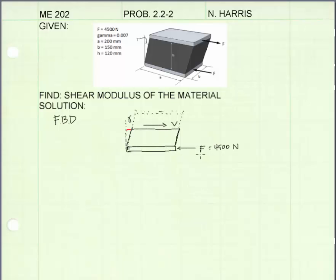Now at the bottom base plate, there is a force of 4,500 newtons. And now I will sum my forces in the x direction to determine the internal shear force V. Summing the forces in the x direction gives me the internal shear force V is equal to 4,500 newtons.